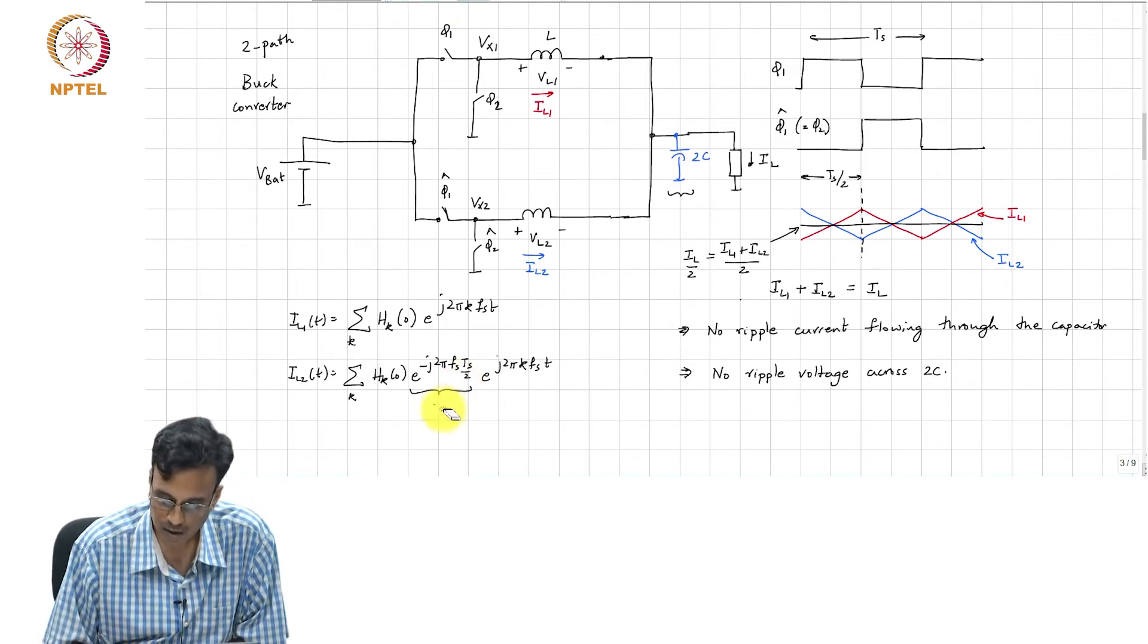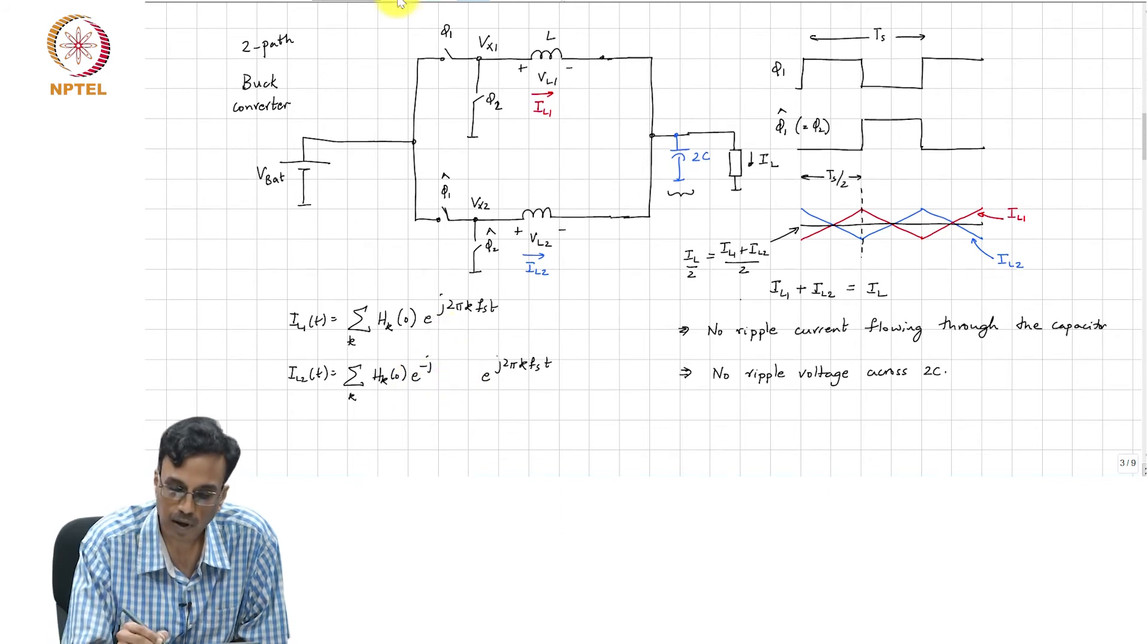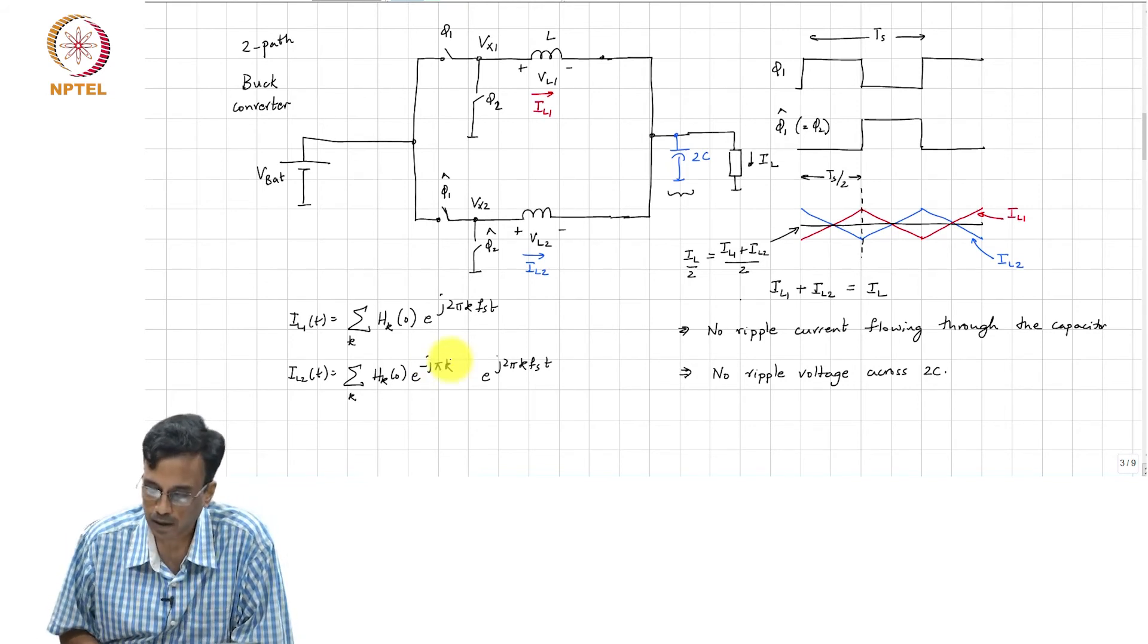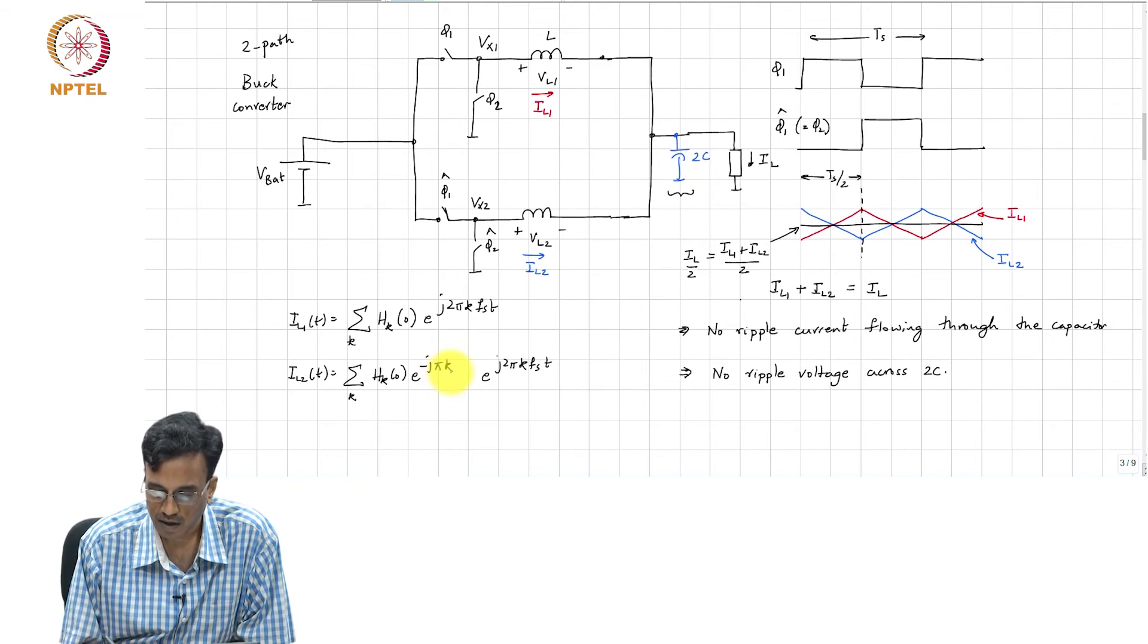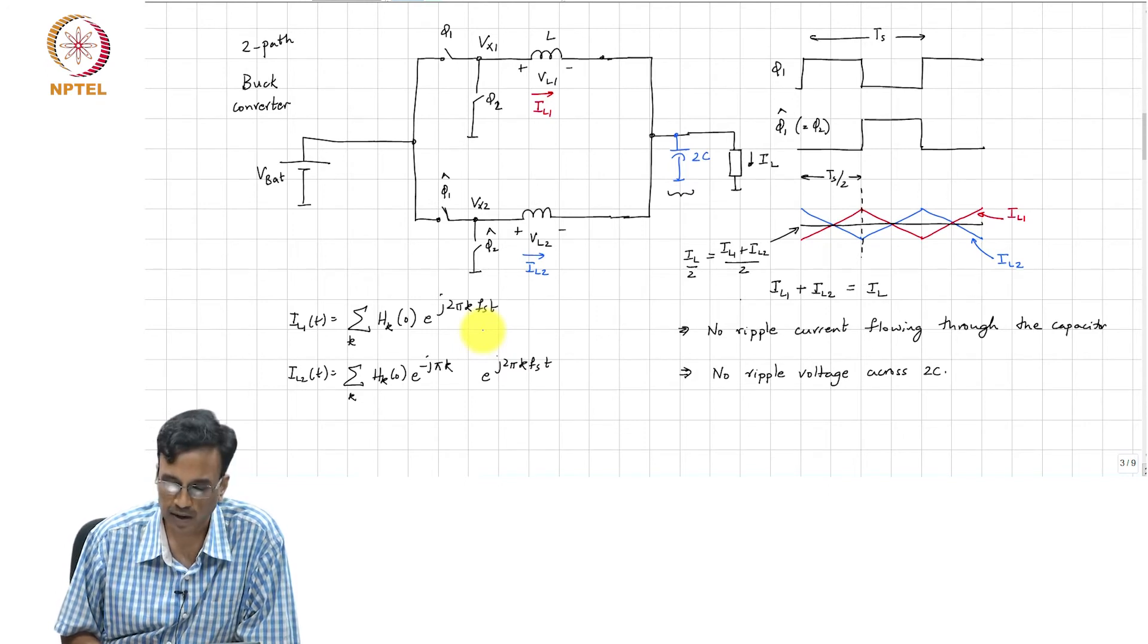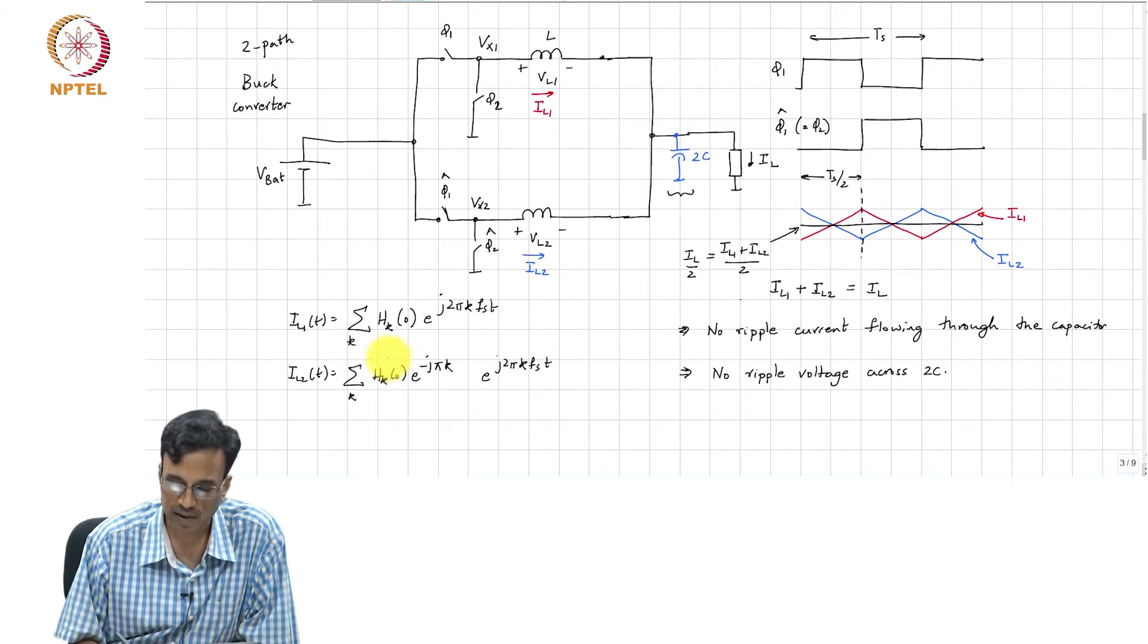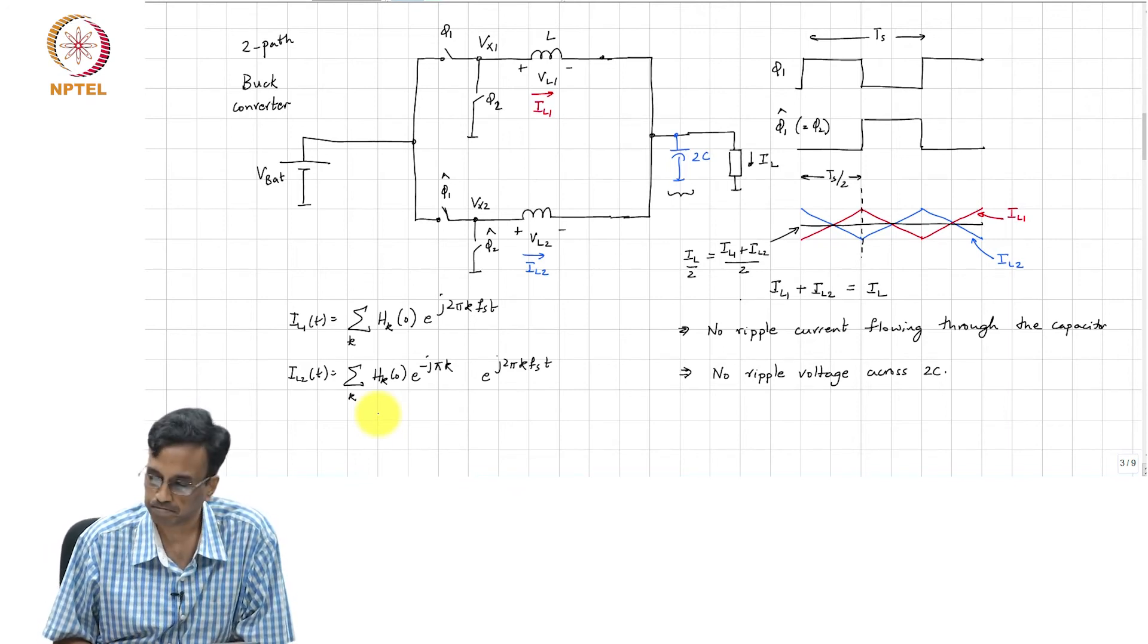IL2 of t is going to be hk(0) e to the minus j 2 pi k fs times ts by 2 e to the j 2 pi k fs times t. This is equal to minus 1 to the k. This is minus j pi times k. As you can see, there is cancellation, because this is only true for, remember that only the even harmonics are present. So this will cancel out all the even harmonics. What you get is only DC will add. If you add IL1 plus IL2, the only components that will add are DC. All the even harmonics get cancelled.